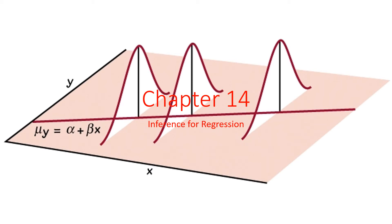Welcome back to chapter 14, the final chapter we will be looking at this year. This chapter is about inference for regression. Way back in the beginning of the year, we learned how to find a regression line — the y-hat equals a plus bx thing. We'd plug it into our calculator, and the calculator would do most of it. It's a least squares regression line — that was how we found the model to model our data that we graphed in a scatterplot.